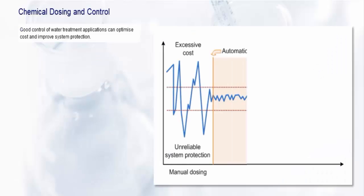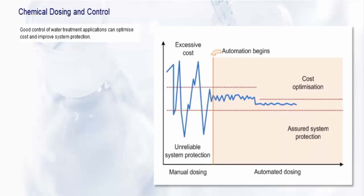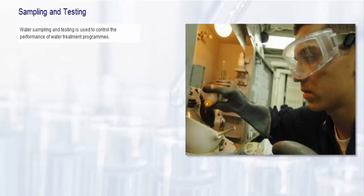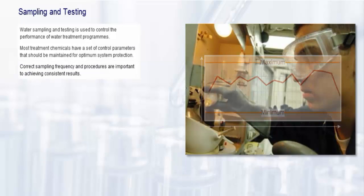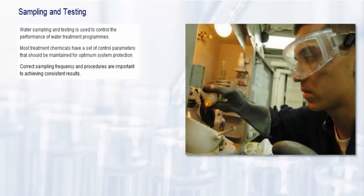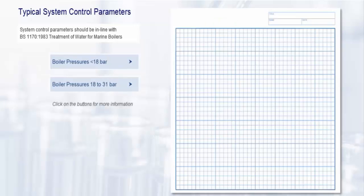Most treatment chemicals have a set of control parameters that should be maintained for optimum system protection. Correct sampling frequency and procedures are important to achieving consistent results. System control parameters should be in line with BS 1170 1983 Treatment of Water for Marine Boilers. Consult your water treatment technical manual for further guidance.